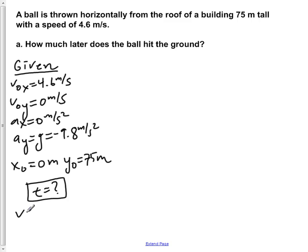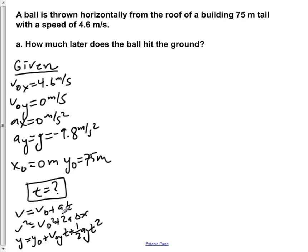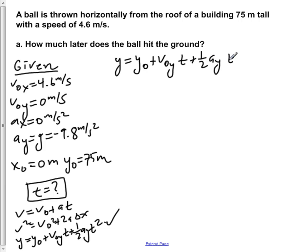Now looking at the three kinematic equations — v equals v0 plus at; v squared equals v0 squared plus 2a delta x; and y equals y0 plus v0y·t plus one-half·ay·t squared — we need one that corresponds to our given information to solve for the time. The best equation to use is the third kinematic equation, y equals y0 plus v0y·t plus one-half·ay·t squared, because the first doesn't deal with any change in height, and the second doesn't involve time.